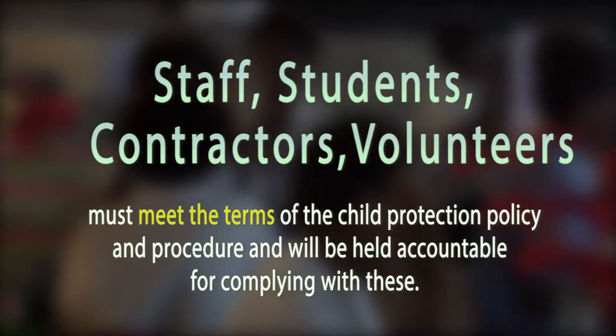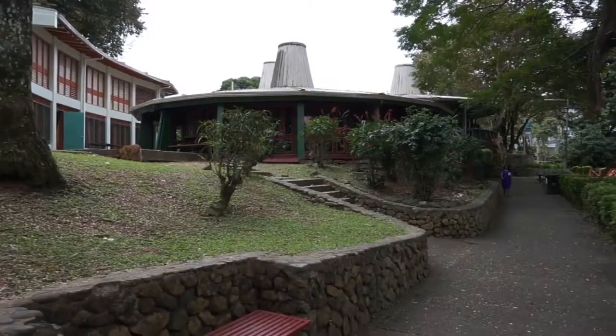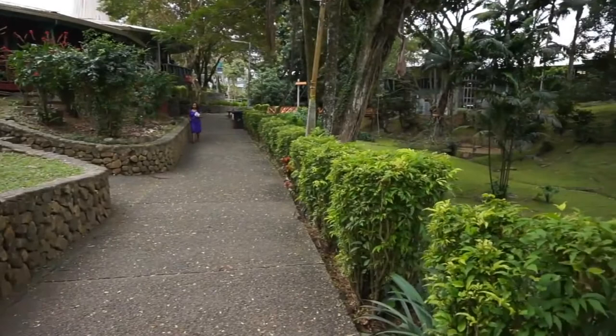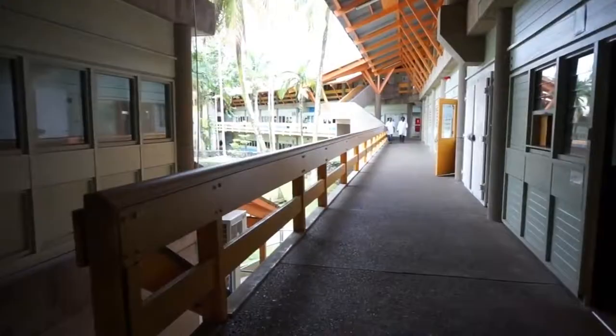Staff, students, contractors, and volunteers must meet the terms of the Child Protection Policy and Procedure and will be held accountable for complying with these. This will require self-assessment and disclosure as appropriate. Breaches will be dealt with under the relevant staff and student disciplinary procedures. Similarly, contractors and volunteers will face equivalent sanctions for non-compliance.